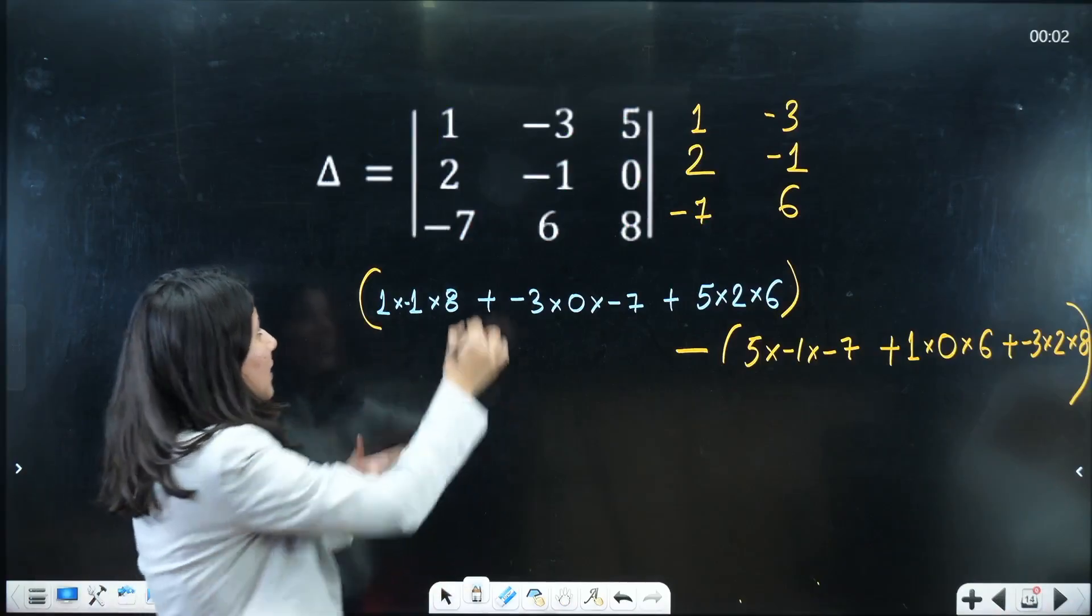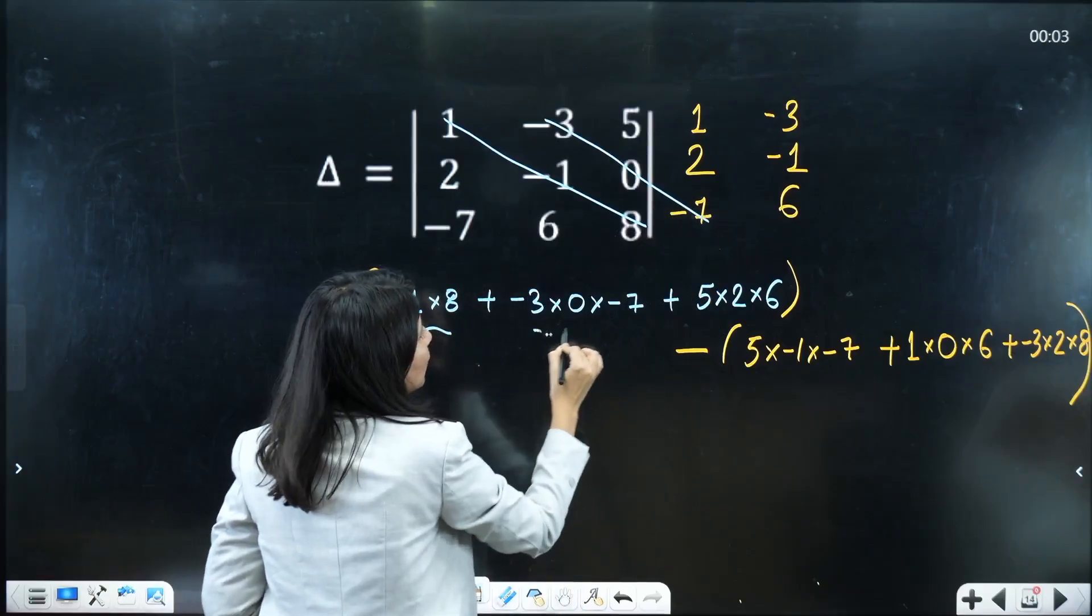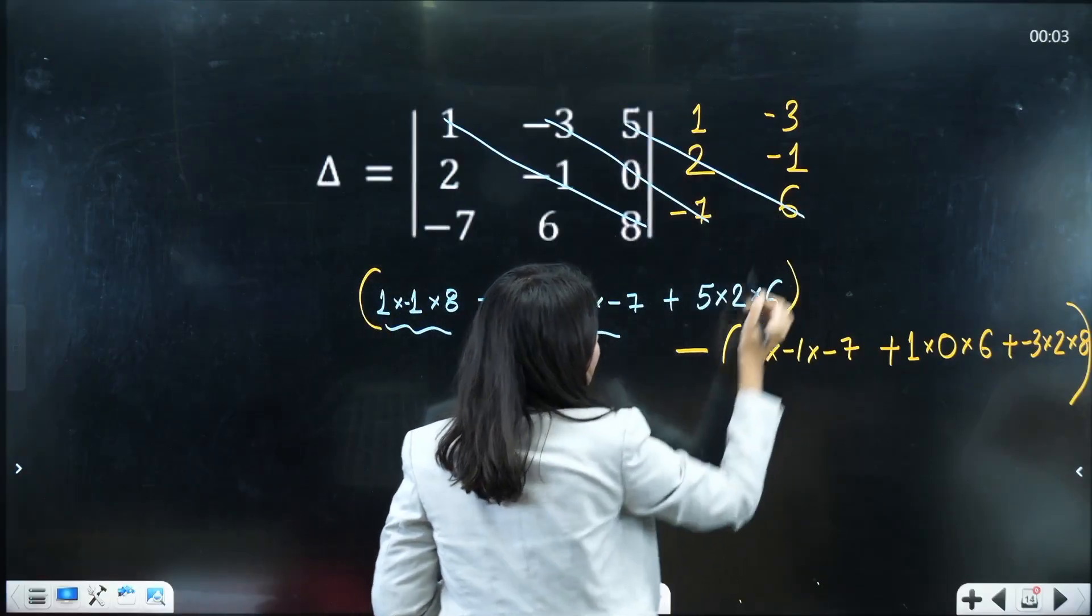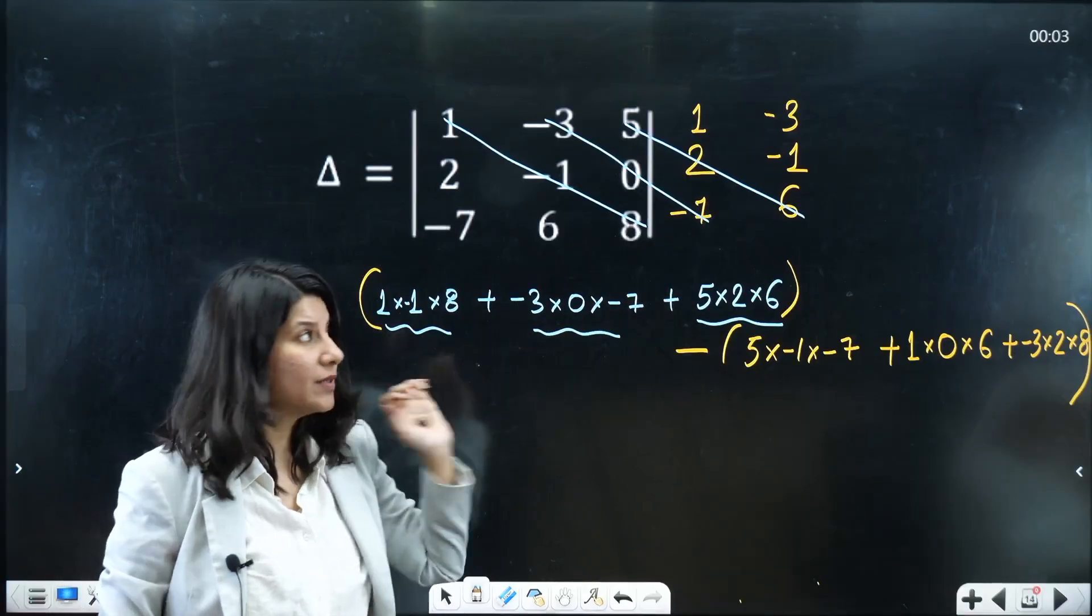So you multiplied these three elements written over here, then these three elements written over here, then these three elements written over here and you are going to add all the three numbers.